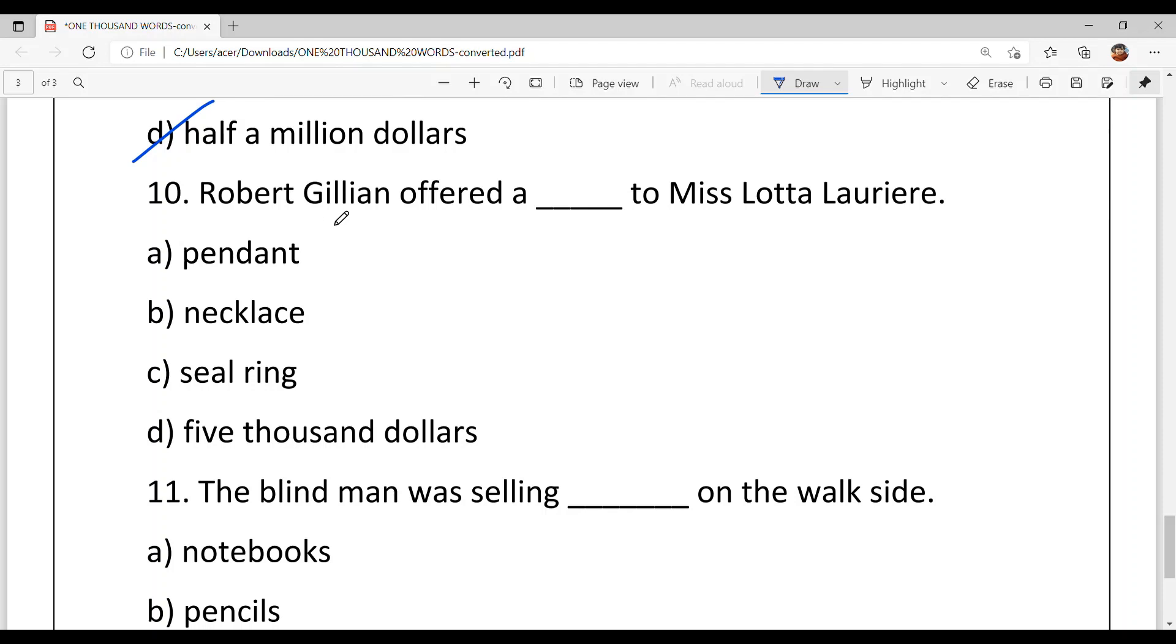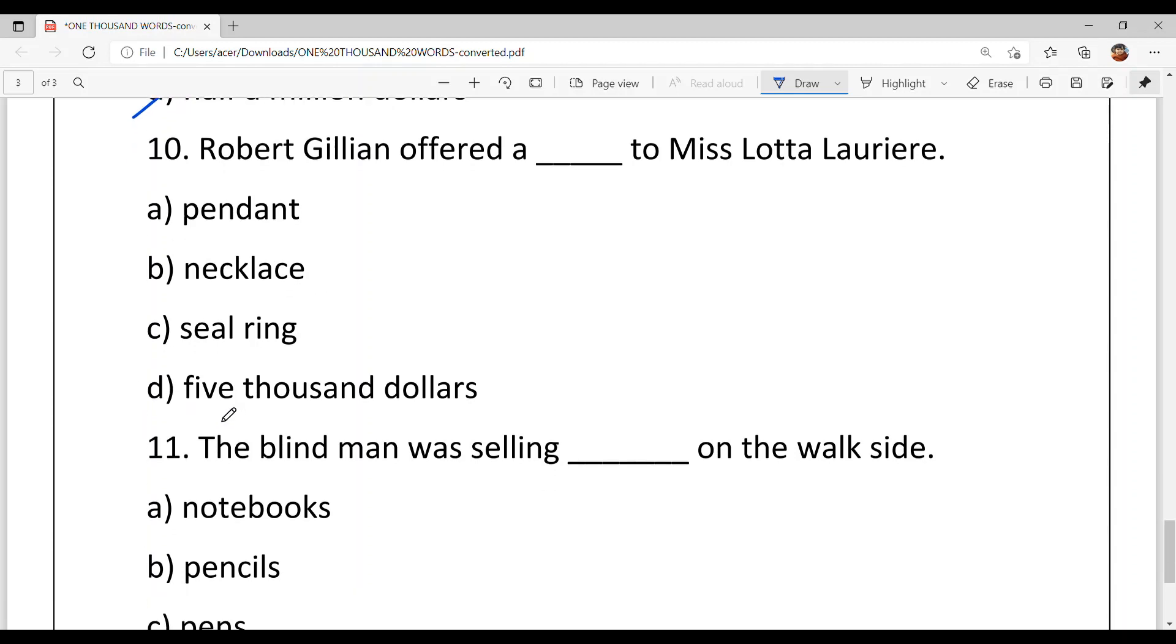Question number 10th, Robert Gillian offered a dash to Miss Lotta Lauriere. What did Robert offer to Miss Lotta? Option A, pendant. Option B, necklace. Option C, seal ring. Option D, $5,000. And option A is your answer.